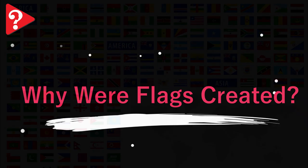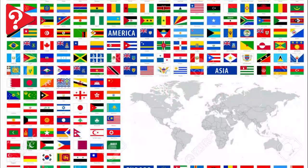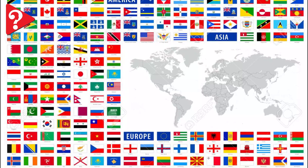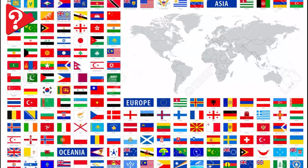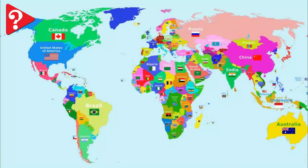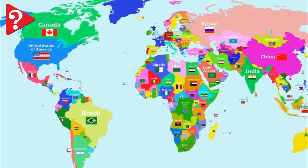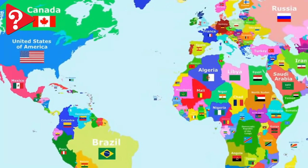Why were flags created? Where did flags originate? Used as a form of identification, flags were first used in battles both on land and at sea. Simple geometric shapes were key to a flag's design because of their high visibility from a distance. This ensured soldiers could easily identify who was on their side or not.